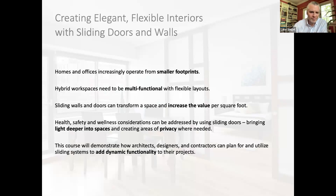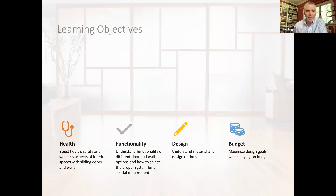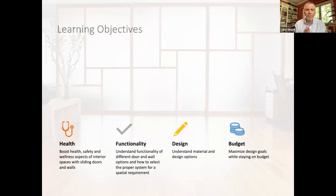Let's jump into the learning objectives. We have four: how to boost health, safety, and wellness of interior spaces with these systems; the functional difference between a sliding door and an operable wall; design considerations around materials, hardware, and best practices for installation; and budget — I'll pepper budget conversations throughout and especially rapid-fire at the end, covering what different systems cost with aesthetics being equal, and how material choices affect budget.